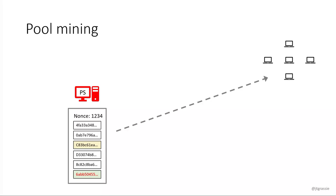The pool miners send back to the pool server the nonce and the result hash they managed to achieve. The results from pool miners are to a lower difficulty than the global difficulty, but one of them hopefully hashes the blob to meet the global difficulty. The pool server then adds the nonce to the block template and distributes it to the rest of the network, gets the payout, and is responsible for paying out all the individual miners for their contributions.